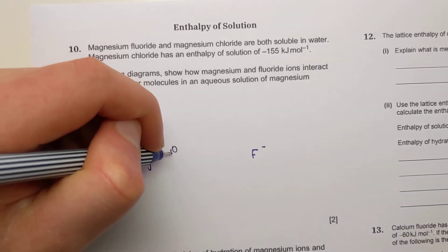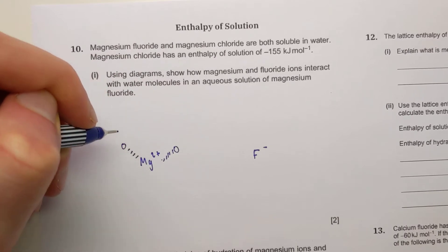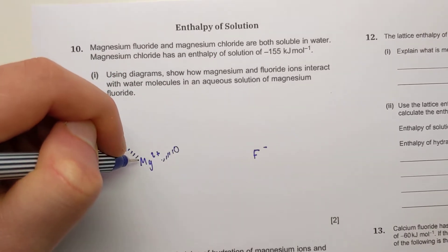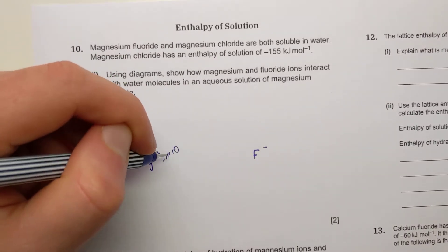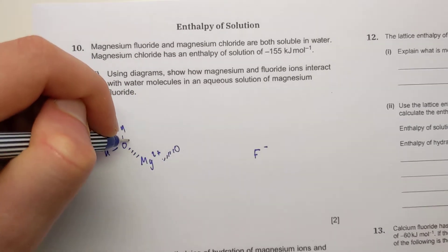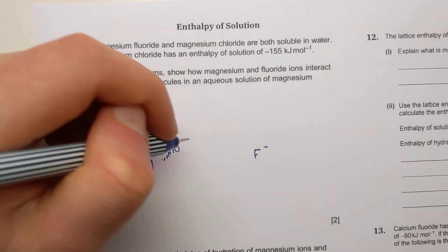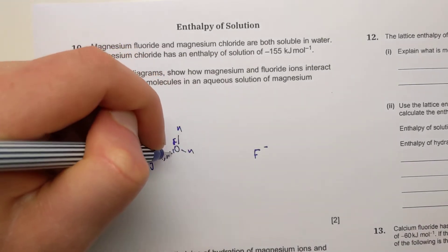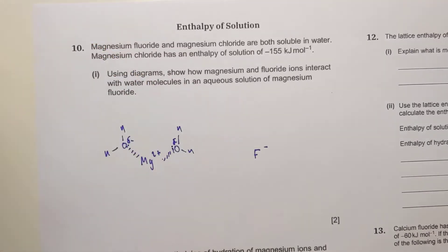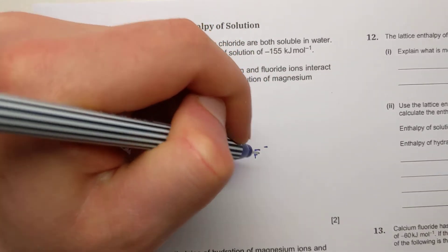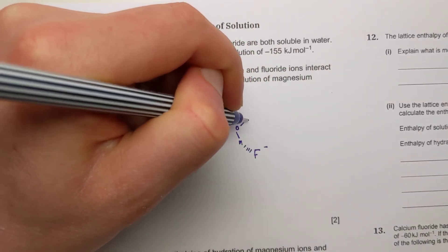You'll have oxygen atoms attached to the magnesium — I wouldn't draw full bonds here because they're dipole interactions, not covalent bonds. I'd put in delta-minus and maybe a lone pair to show it's the part attracting the ion. Draw a couple of water molecules around the ion — probably two is enough. For fluoride, you need an interaction to the H's, because they're the delta-positive part.